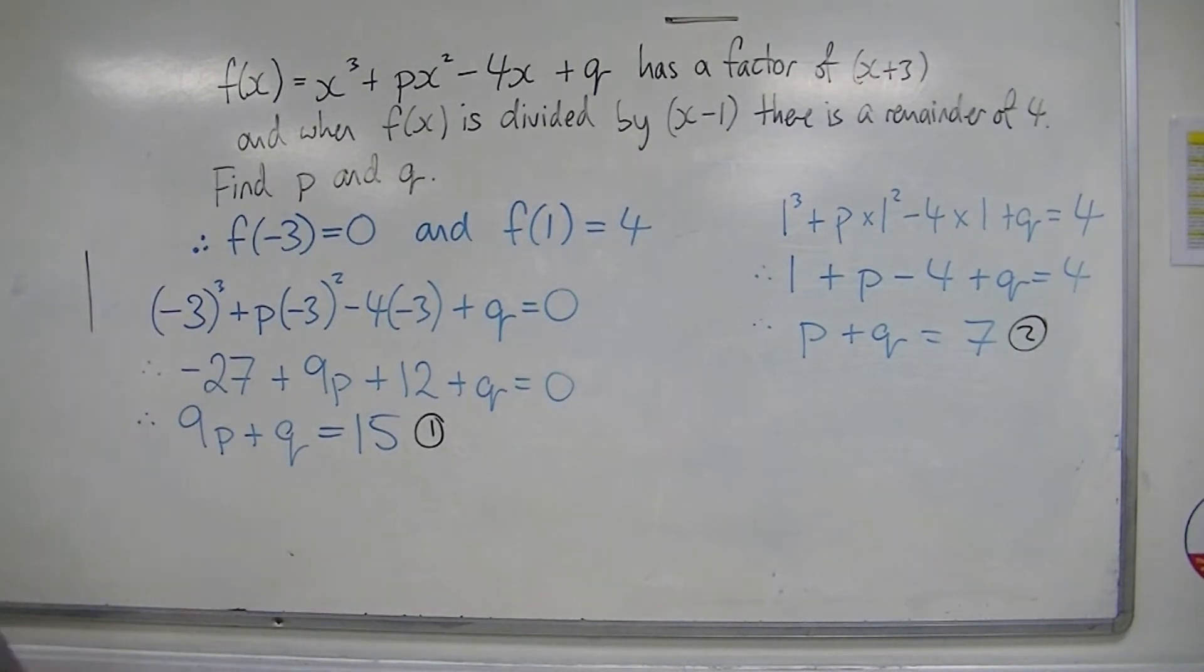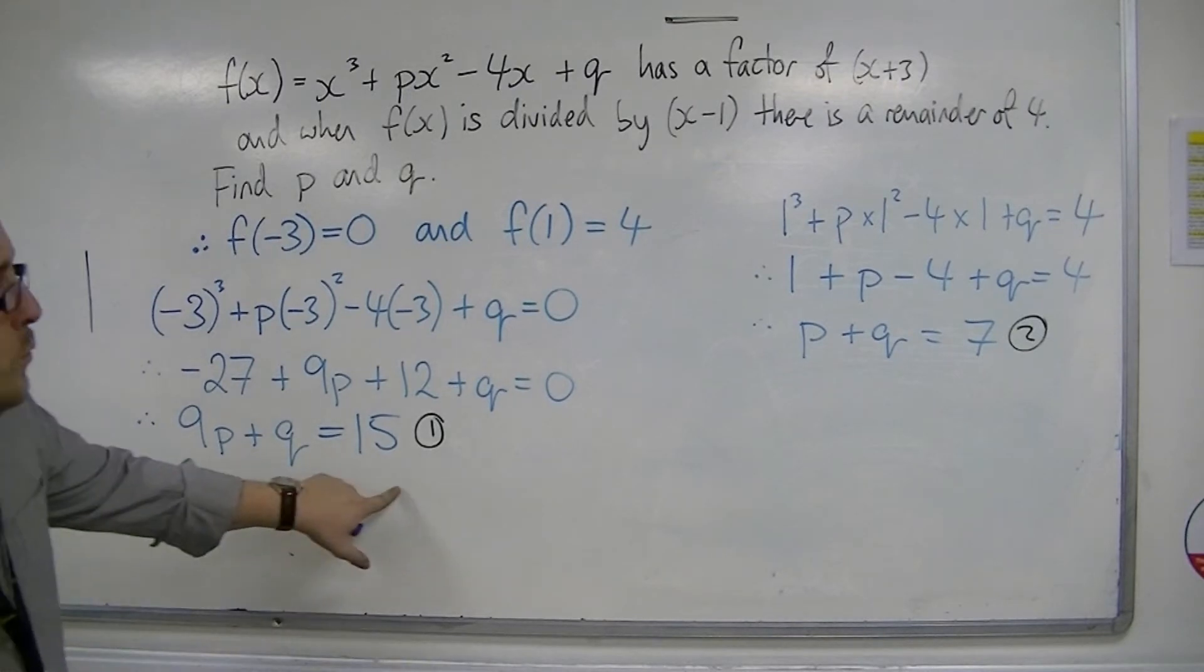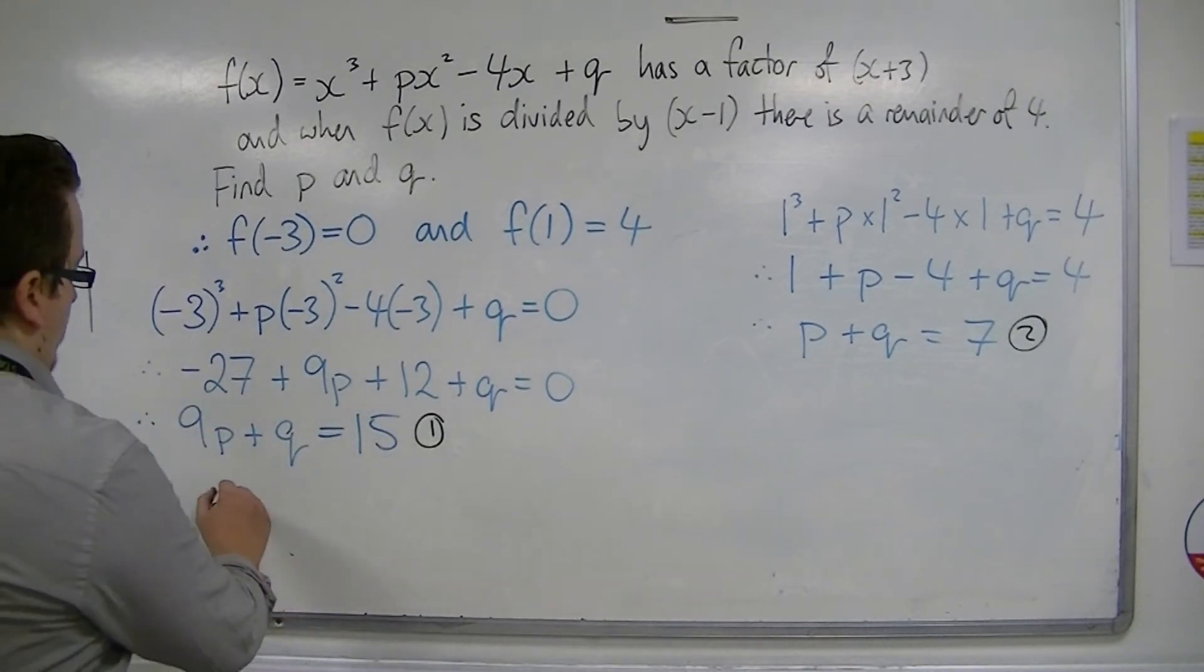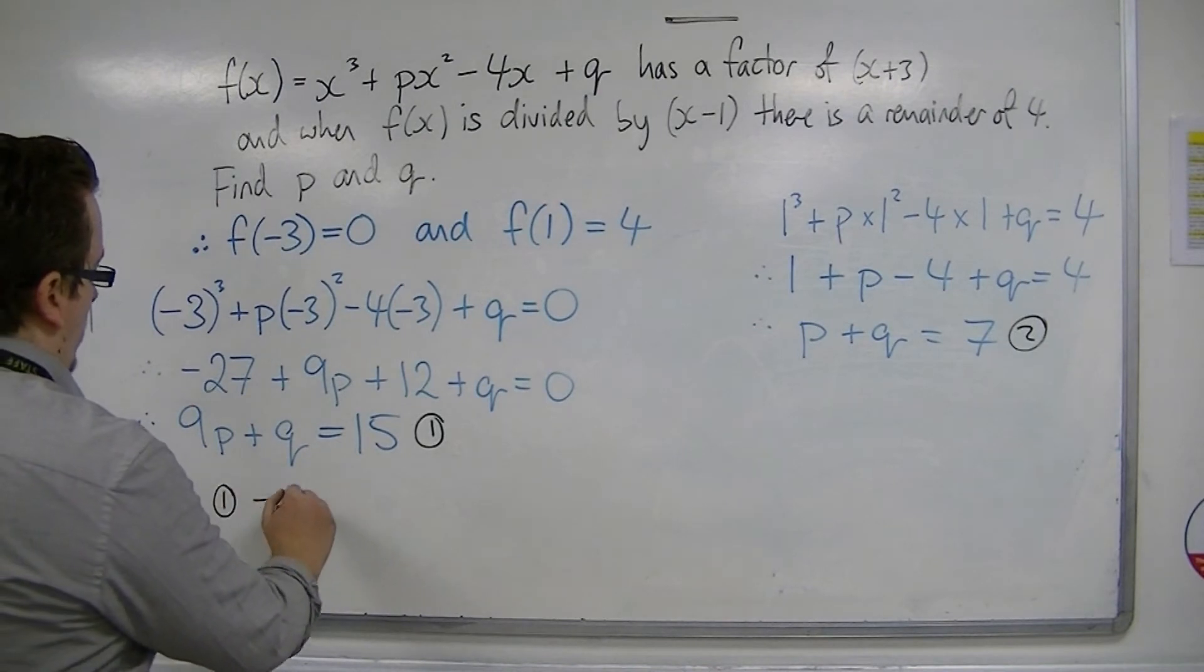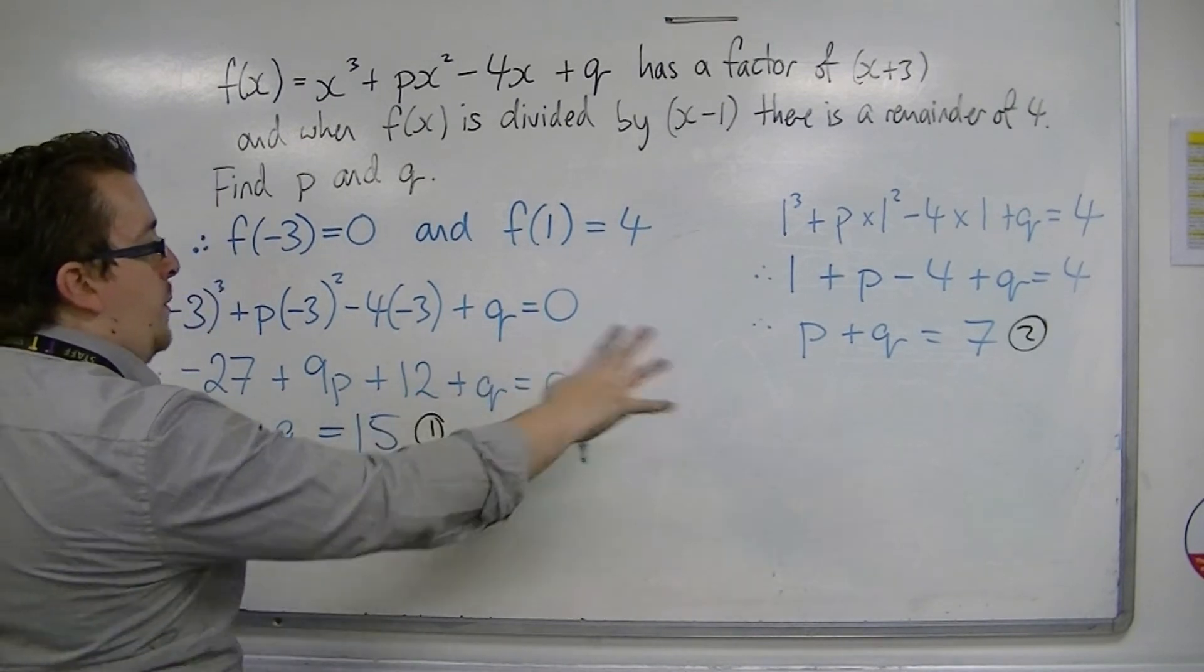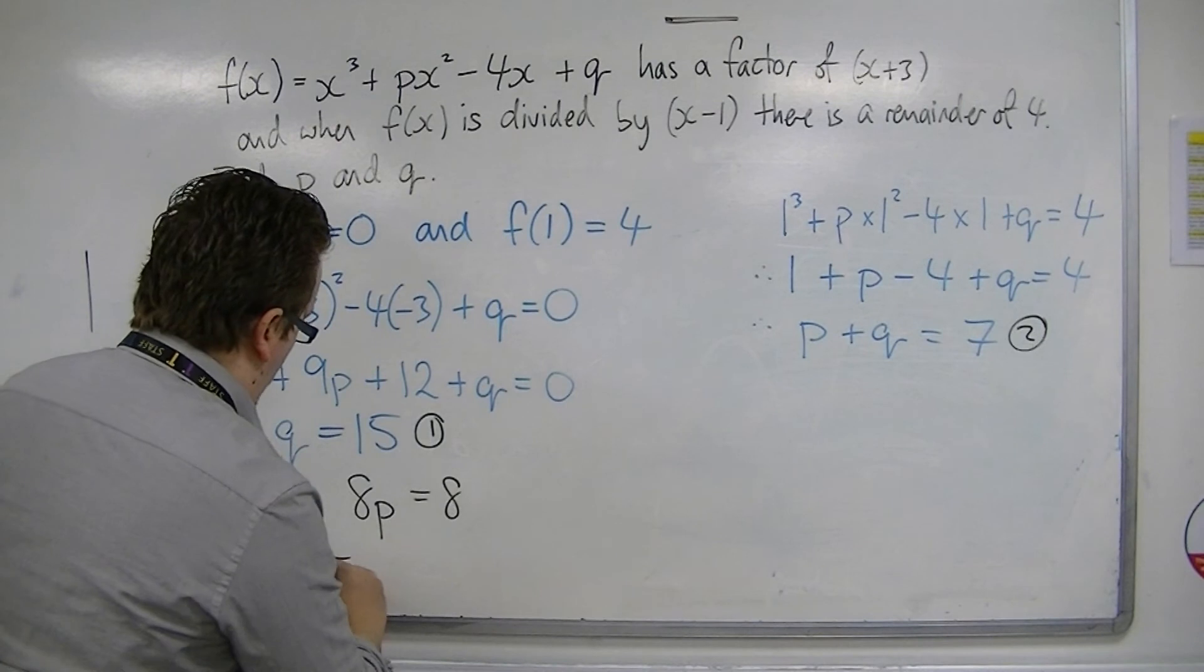So now what you have are 2 equations, 2 unknowns, so that must be simultaneous equations. So what we can do without any manipulation at all is just have equation 1 take away equation 2. 9p take away p is 8p, q take away q is 0, 15 take away 7 is 8, so p is 1.